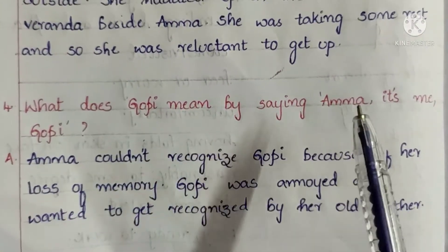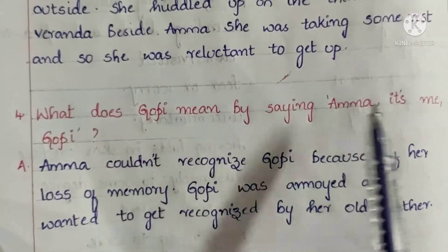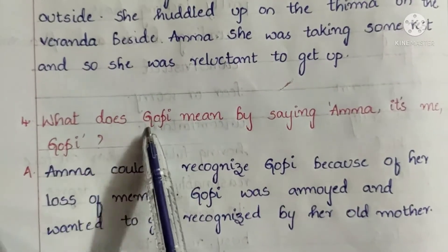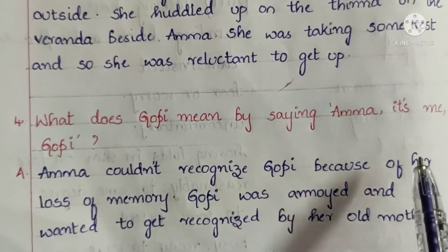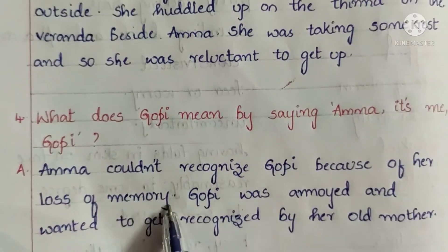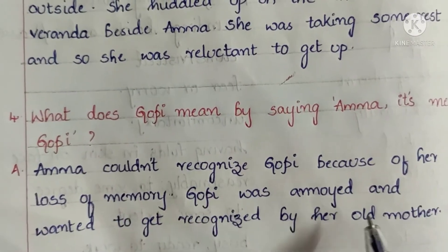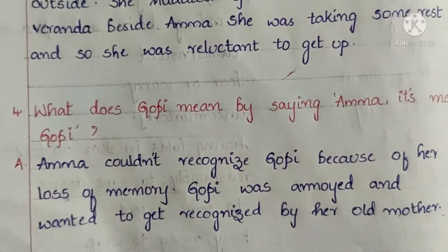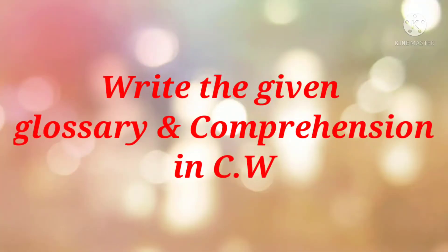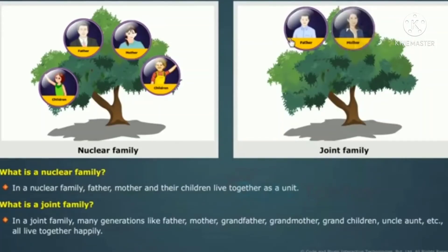What does Gopi mean by saying 'Amma, it's me, Gopi'? Because Amma couldn't recognize Gopi due to her loss of memory, she was unable to recognize him. Gopi was annoyed and wanted to be recognized by the old woman, so he repeatedly said 'it's me, Gopi.' Write the given glossary and comprehension in your classwork. Paste the pictures of nuclear and joint family in your classwork and write the given notes, then send it to my WhatsApp number.